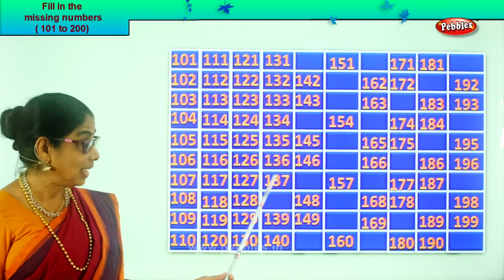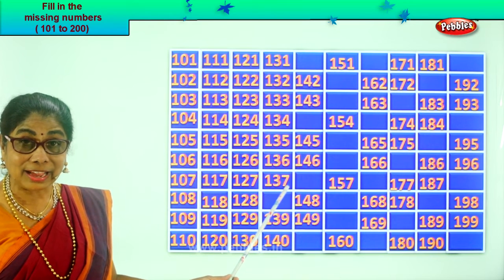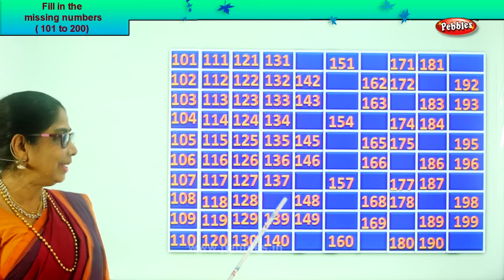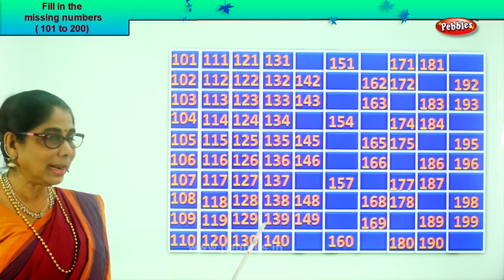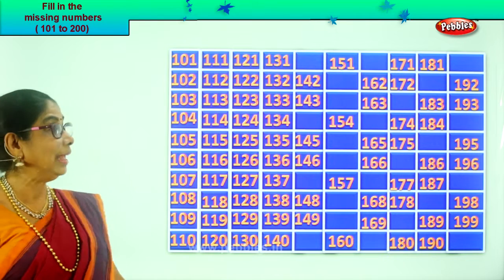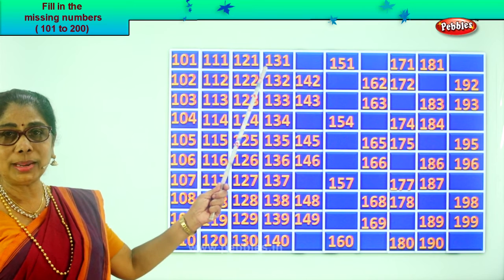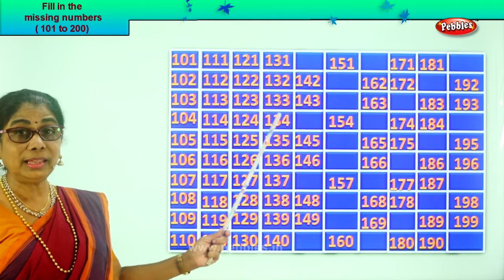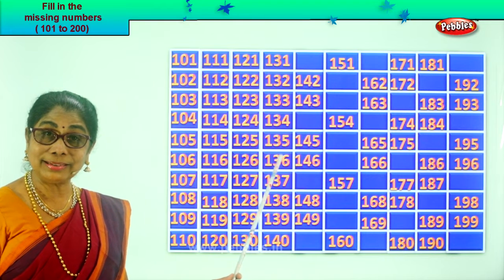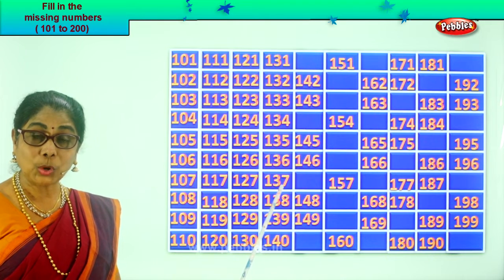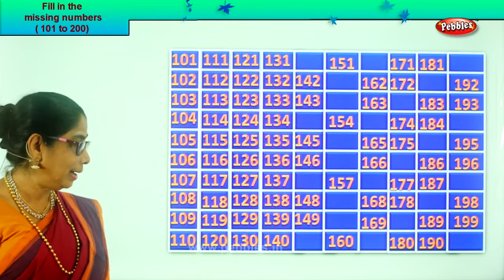136, 137. What is the last number? 7. After 7, 8. After 37, 38. So we write it as 138. Good. 139, 140. Let's count the full row: 131, 132, 133, 134, 135, 136, 137, 138, 139, 140.